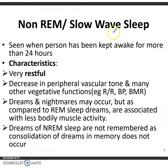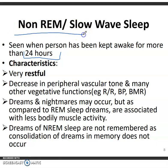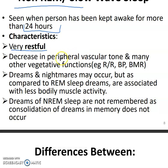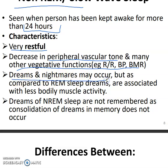In non-REM sleep, if a person has been awake for more than 24 hours and then gets normal sleep, it is very restful. There is a decrease in peripheral vascular tone and other vegetative functions — heart rate is decreased, blood pressure is decreased, and BMR is also decreased. Dreams and nightmares may occur but are less common compared to REM sleep, and there is less bodily muscle activity.